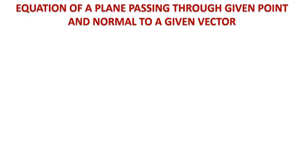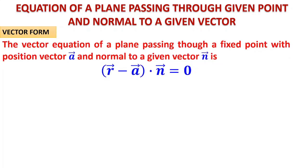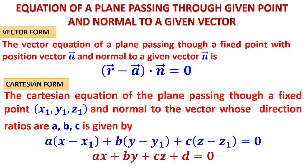Next form: equation of a plane passing through a given point and normal to a given vector. The vector equation of a plane passing through a point with position vector a and normal to a given vector n is (r minus a) dot n equals 0. Note: here n is not required to be a unit vector — it is simply a normal vector. Vector r is the position vector of a general point xi plus yj plus zk, and vector a is the position vector of the given point.